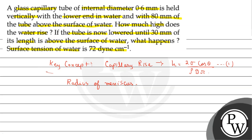Now the given values: diameter of the tube D equals 0.6 mm, so radius R equals 0.3 mm, which equals 0.03 cm. The value of surface tension sigma equals 72 dynes per centimeter. The length of the tube above the water surface is capital L equals 80 mm, which we convert to centimeters — therefore 8 centimeters.